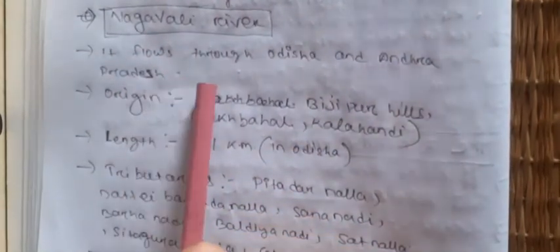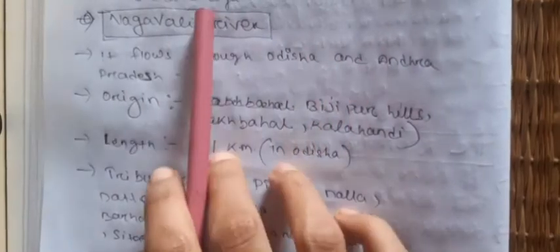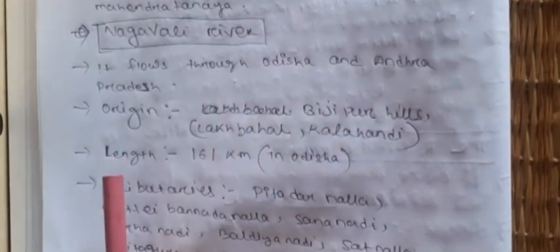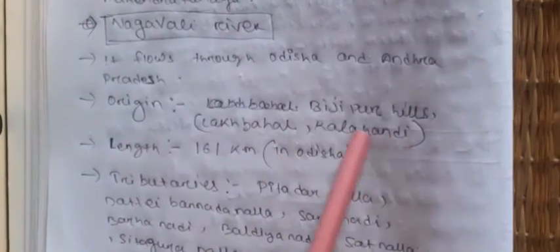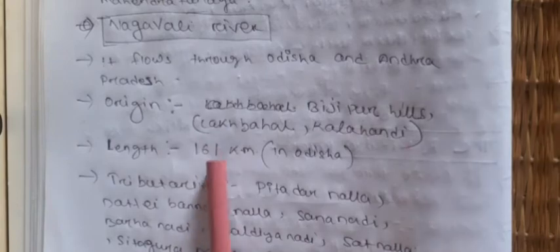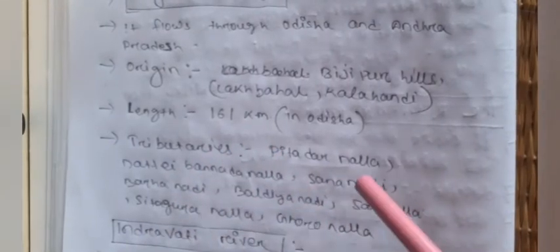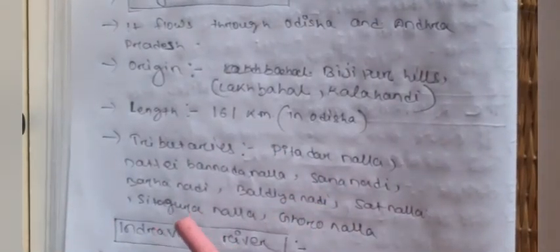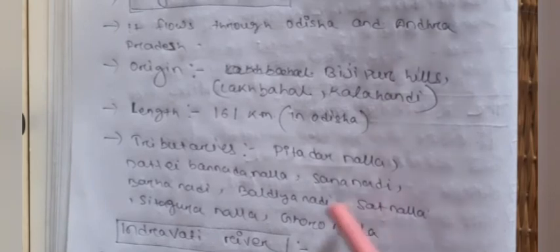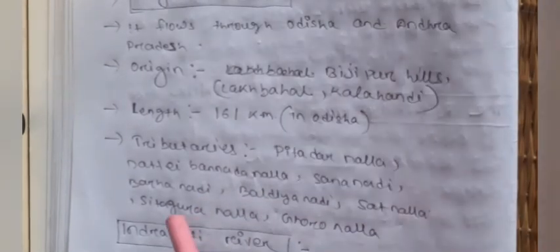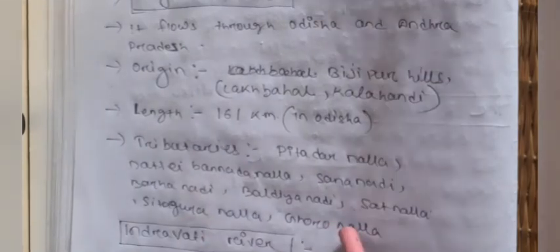Nagavali river also flows through Odisha and Andhra Pradesh. Its origin is in Bijipur Hill of Kalahandi district. Length is 161 km. Its tributaries include Pitadar Nala, Dattay, Banoda Nala, Sanna Nadi, Baraha Nadi, Baldia Nadi, Satta Nala, Sittagoda Nala, and Gorona Nala.